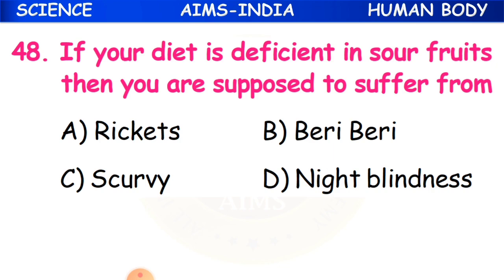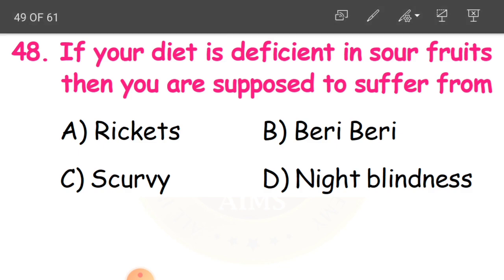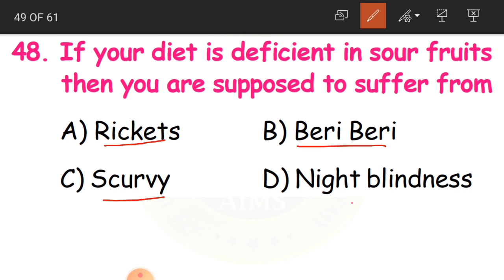Question 48: If your diet is deficient in sour fruits, you are supposed to suffer from which disease? Sour fruits contain Vitamin C, so if you do not have Vitamin C in your body, you will suffer from scurvy.